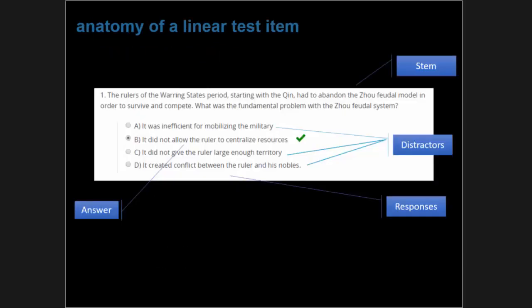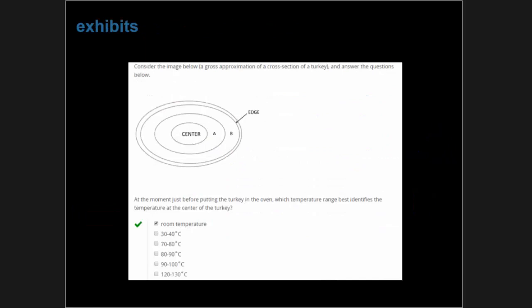As we talk about linear assessment, let's begin with the anatomy of a linear assessment item. The text that asks you to do something — sometimes called the question text — is referred to in testing terms as the stem. The correct answer is simply called the answer, and all the wrong answers in a multiple choice question are called distractors. The answer and distractors taken together are referred to as the responses. An exhibit is some piece of information required to answer the question — it could be an image, a reading passage, a video, or animation.